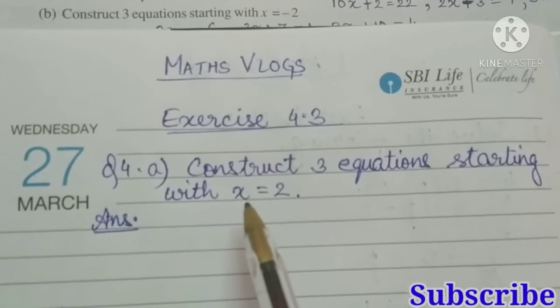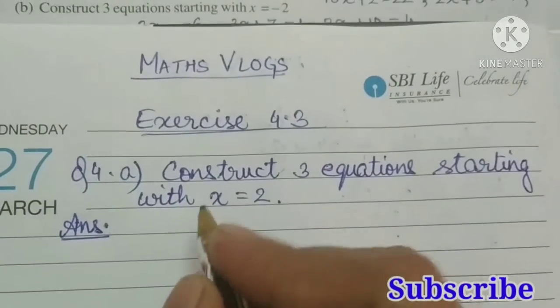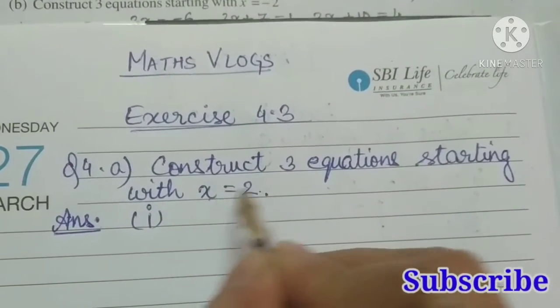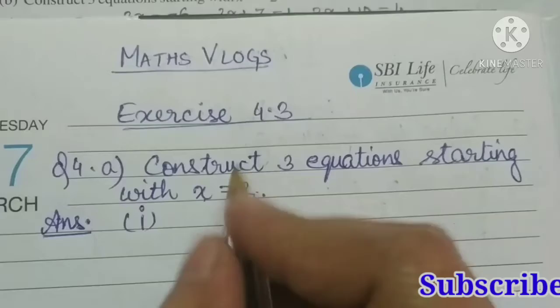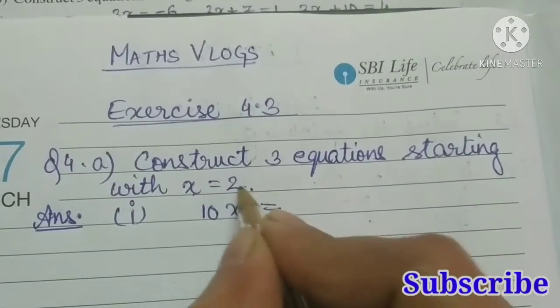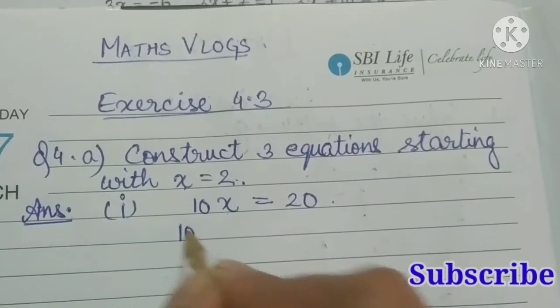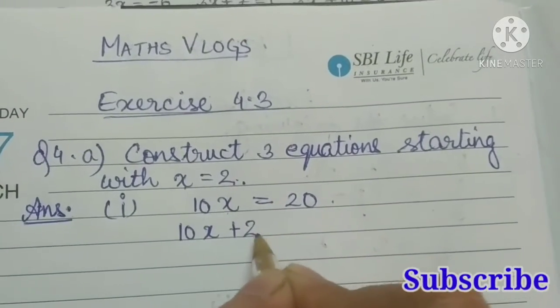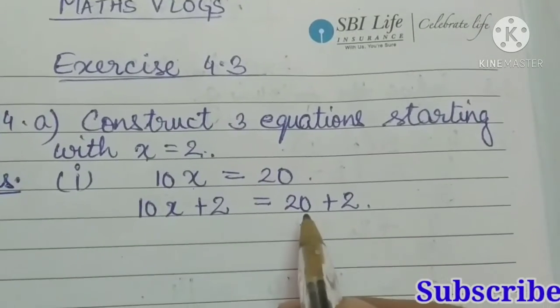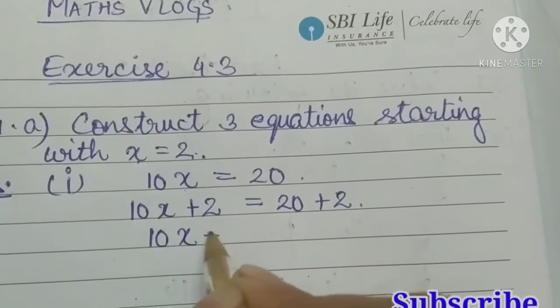So we have to start with x is equal to 2. First equation: let us multiply both sides by 10, so we will get 10x is equal to 10 into 2 is 20. Now let us add 2 on both sides, so we will get 10x plus 2 is equal to 20 plus 2.